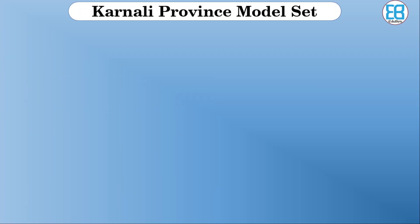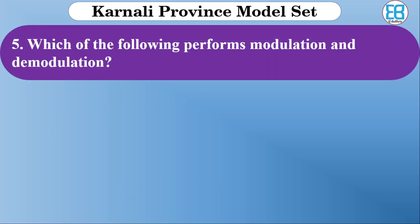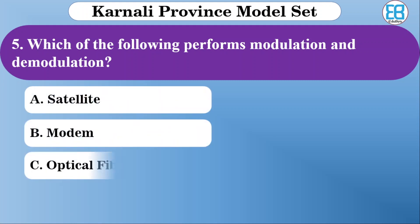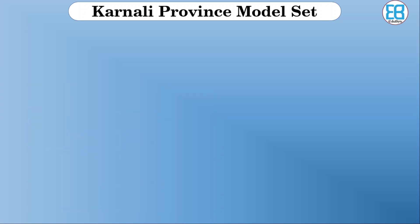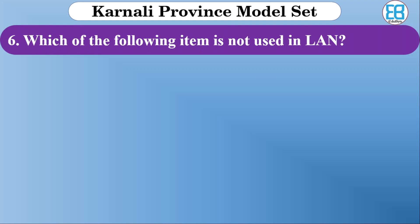Which of the following performs modulation and demodulation? The options are satellite, medium, optical fiber, and coaxial cable. The correct option is medium. Next question: which of the following item is not used in LAN — local area network?